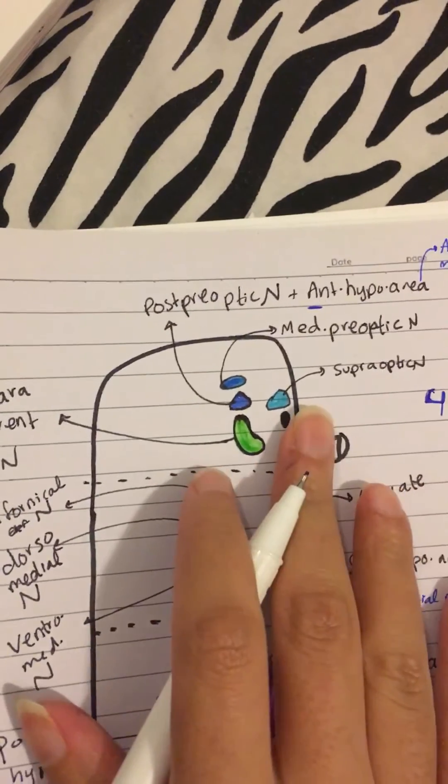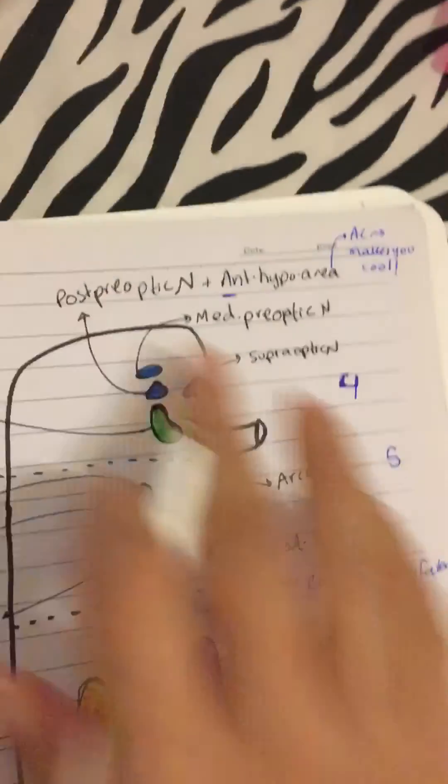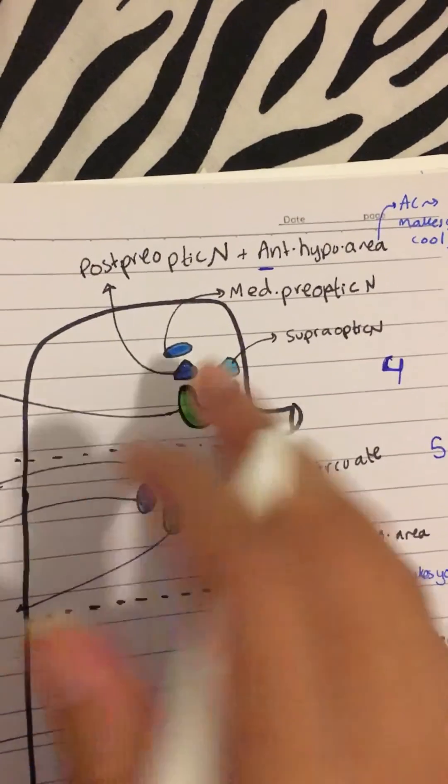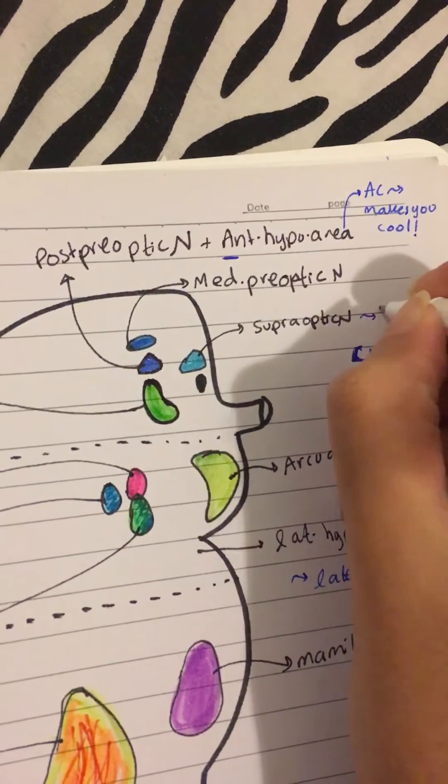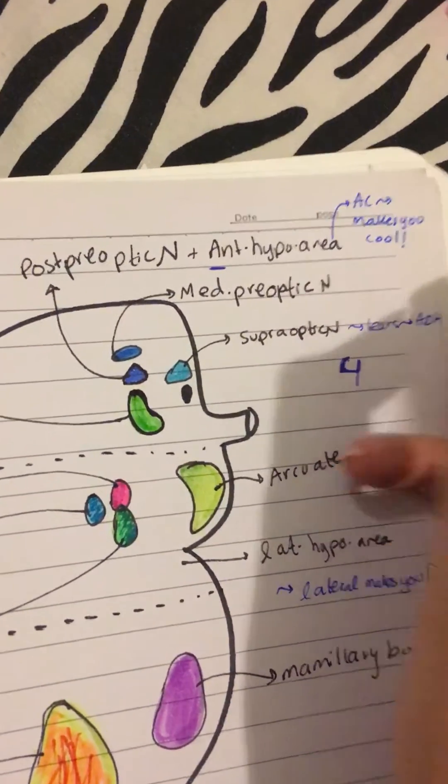And it is above, okay, supra optic nucleus. I made it above the eye, so it kind of deals with tears. So it just releases tears. So it just releases ADH for your water balance.